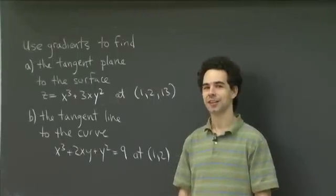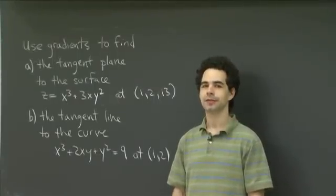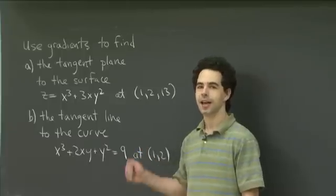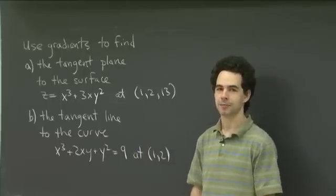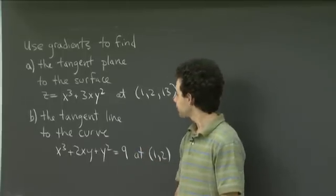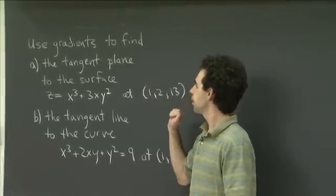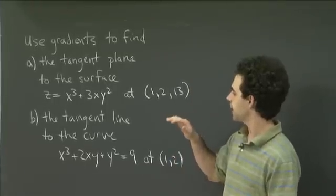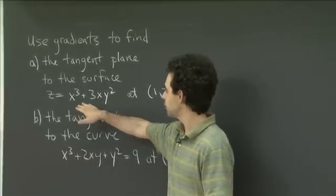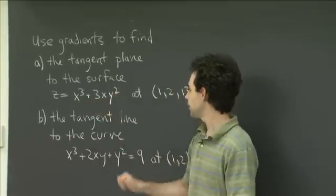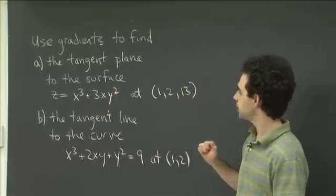Hi. Welcome back to recitation. In lecture, you've been learning about using gradients to compute tangent planes to surfaces. So I have an example of a practice problem here for you. What I'd like you to do in part A is to use gradients to find the tangent plane to the surface z equals x cubed plus 3xy squared at the point (1, 2, 13).